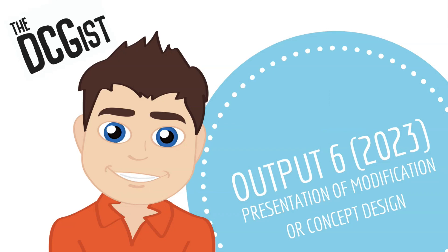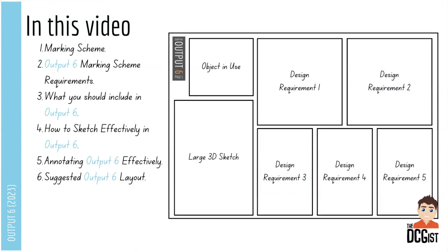Hello and welcome to this video from the DCGist. In this video we're going to be looking at output 6, the presentation of modification or concept design. In particular we're going to be looking at the marking scheme, then looking at what requirements come from that marking scheme, what you should include in output 6, how to sketch and annotate those sketches effectively, and finally a suggested layout for your output 6.